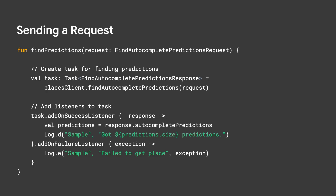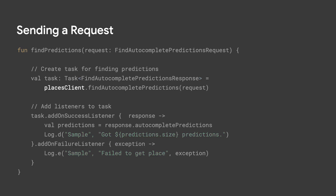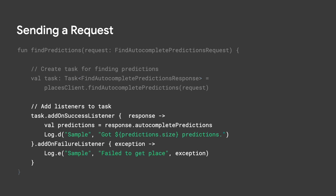The last feature I'd like to share with you is an alternative to writing asynchronous code with the Places SDK through the use of Kotlin coroutines. Using the request object you constructed earlier, you can use the Places client to fetch predictions using the Find Autocomplete Predictions method. This method returns a task object from which you can attach a success and a failure callback to be later notified of the result.